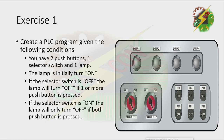Exercise 1: Create a PLC program given the following conditions. You have two push buttons, one selector switch, and one lamp. The lamp is initially turned on. If the selector switch is off, the lamp will turn off if one or more push buttons are pressed. If the selector switch is on, the lamp will turn off if both push buttons are pressed.